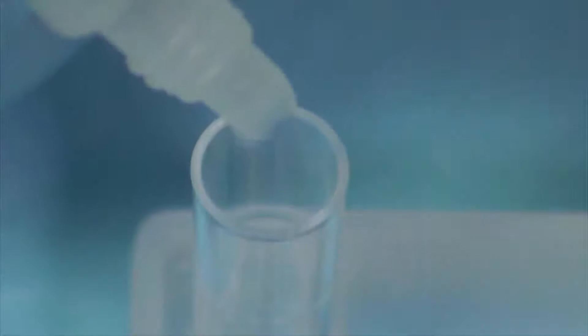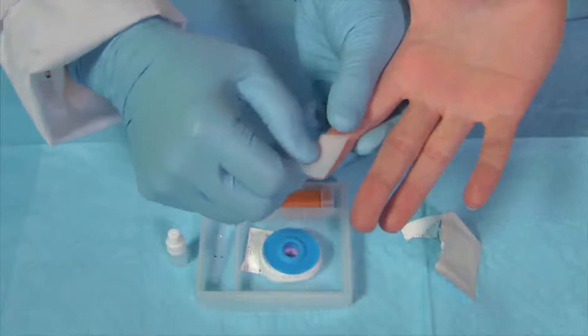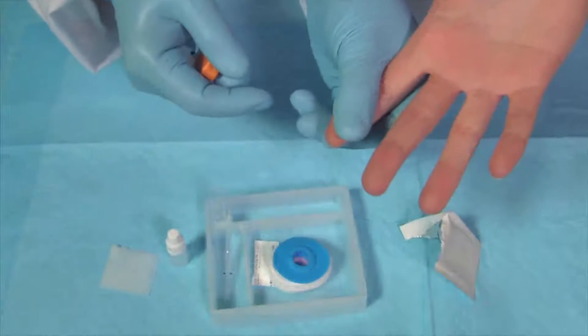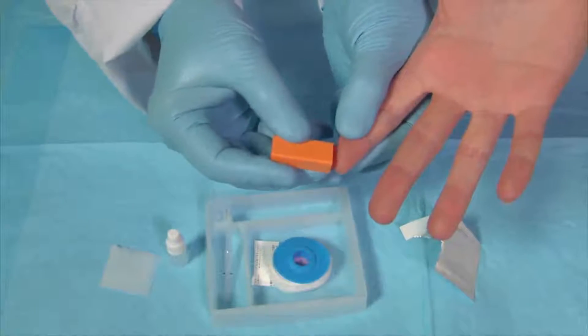To start, add 5 drops of universal buffer to the sample vial. Clean and massage the finger to promote blood flow and puncture the skin using the single-use lancet.